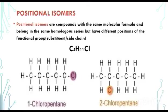Now let's look at positional isomers. Positional isomers are compounds with the same molecular formula and belong in the same homologous series but have different positions of the functional group — that could be your substituent or your side chain.